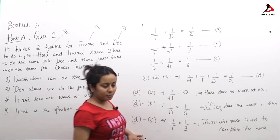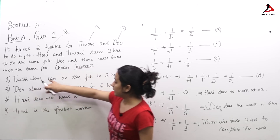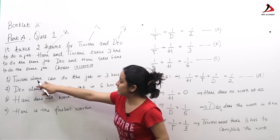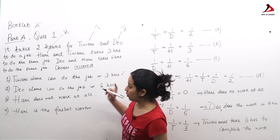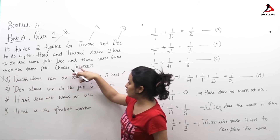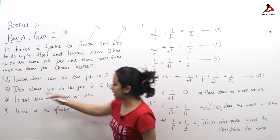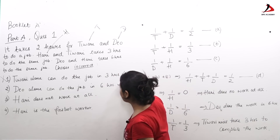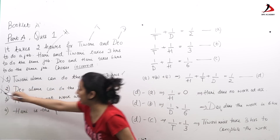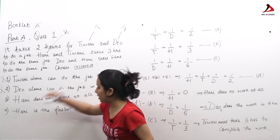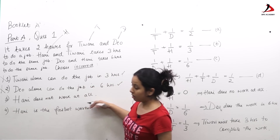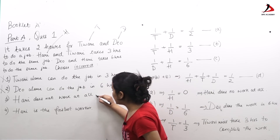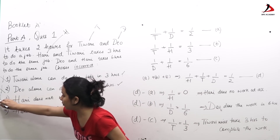Looking at the options: Option 1 states Tiwari alone can do the job in 3 hours, which matches what I obtained — so this statement is correct and is not the answer. Option 2 states Dio can do the job in 6 hours, which also matches my calculation — correct, not the answer. Option 3 states Hari does not work at all, which is exactly what I found — correct, not my answer.